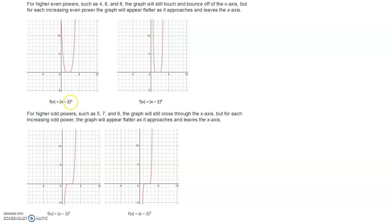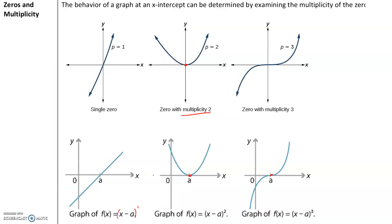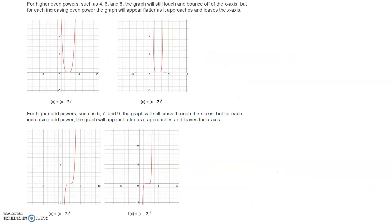For higher degrees like 4th, 6th, or 8th power, the graph still touches the x-axis and bounces off, but it gets flatter and flatter as the degree increases. The same applies to odd degrees — the snaky shape gets flatter at higher degrees. We'll mainly deal with multiplicity of 1, 2, and 3. Higher degrees follow the same shapes but won't be covered in this class.